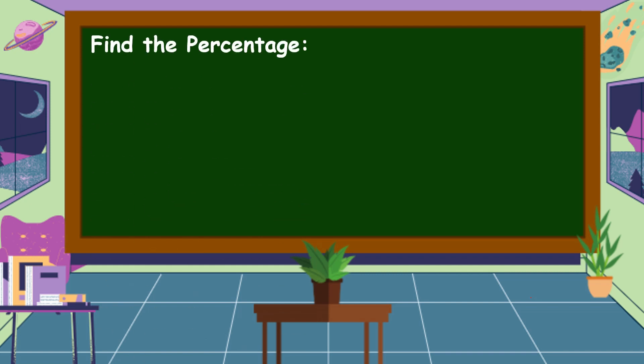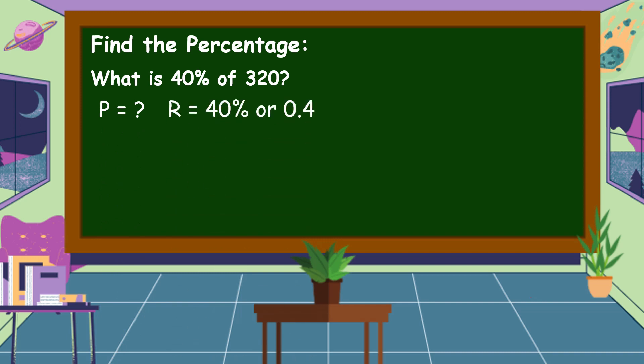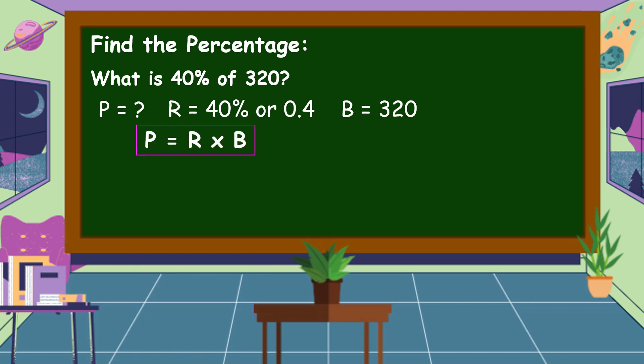Another example of how to find the percentage of a number: What is 40% of 320? In this question, percentage is unknown. The rate is 40% or 4 tenths, and the base is equal to 320. We're going to use the formula: P is equal to R times B, where P is the percentage, R is the rate, and B is the base.